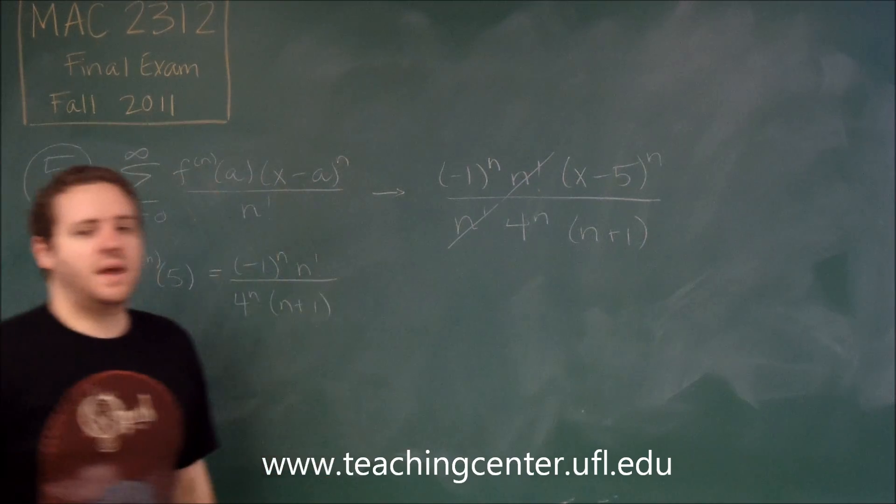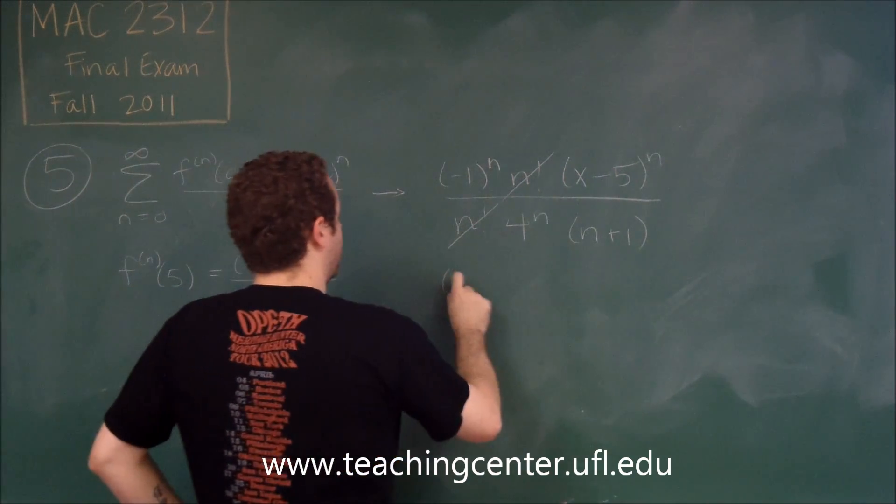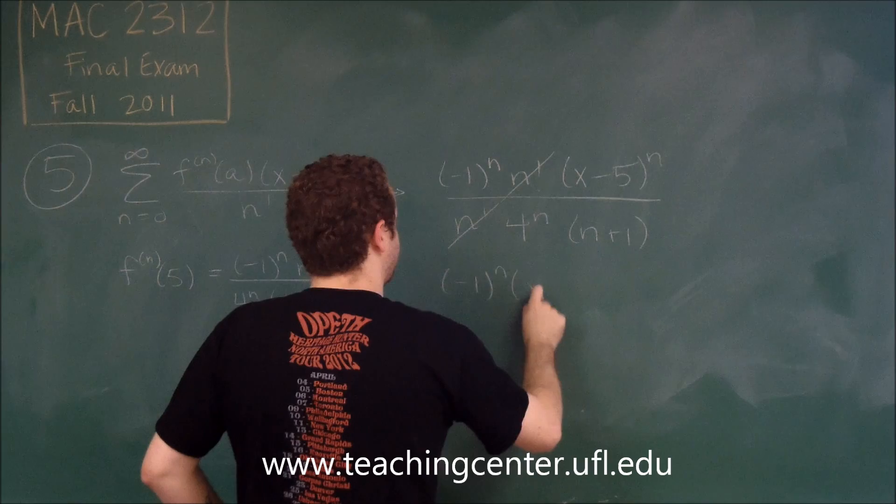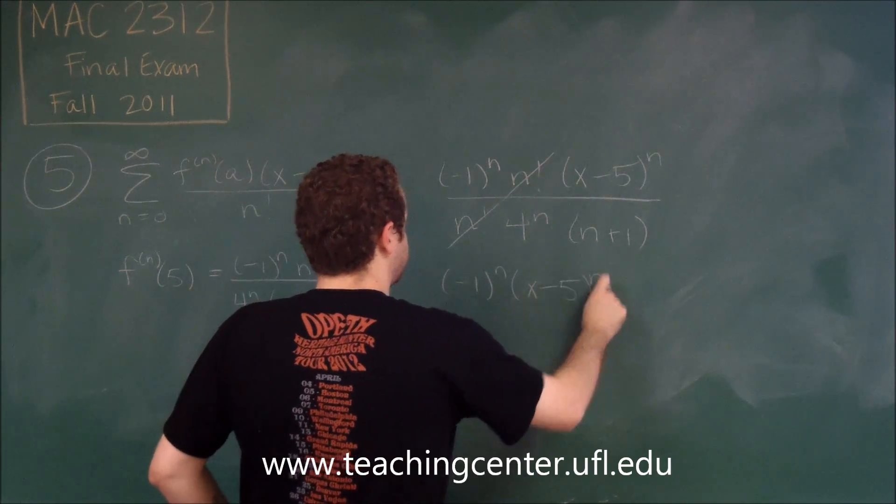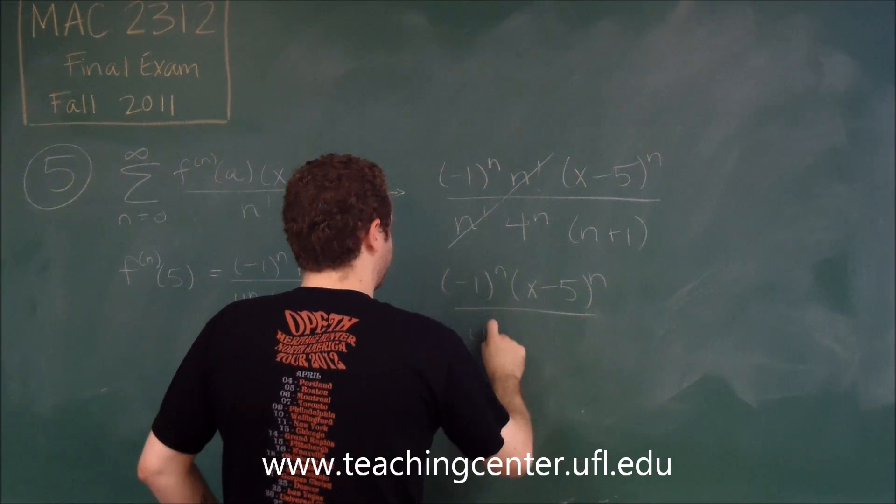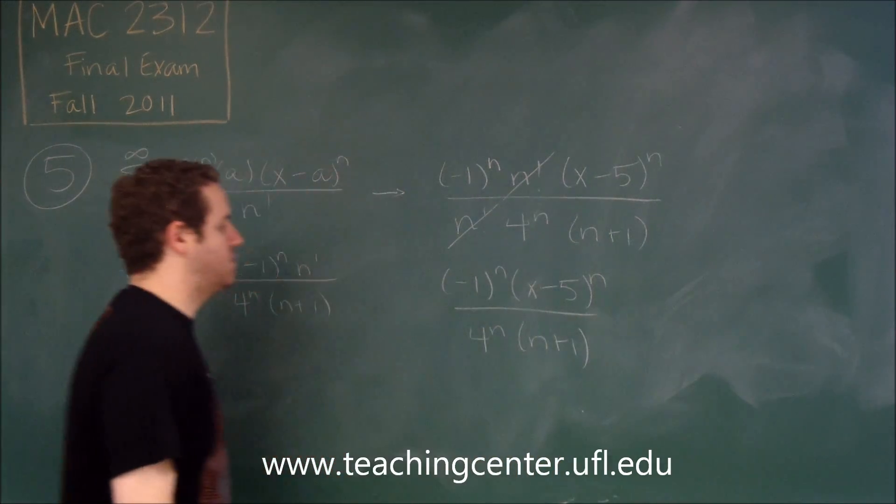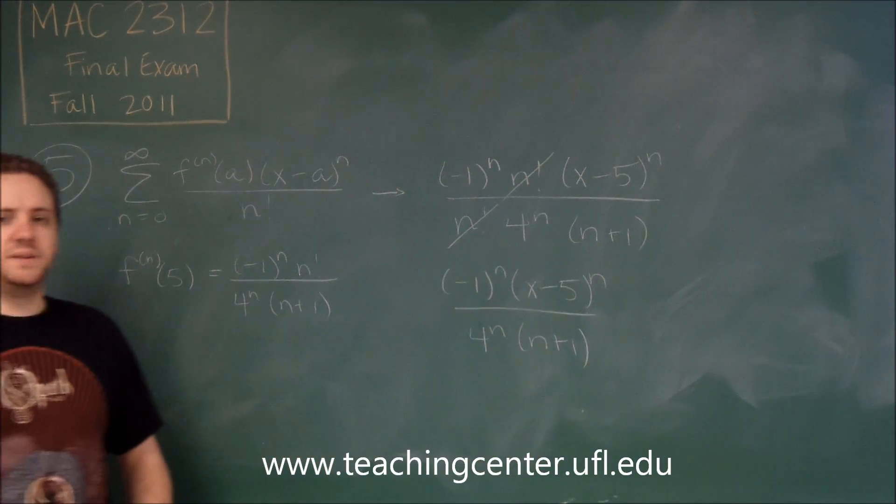You can see that we have an n factorial that cancels out on both. So we have negative 1 to the n, x minus 5 to the n, all over 4 to the n, n plus 1. So that's what our Taylor series has boiled down to.